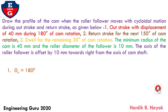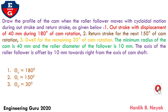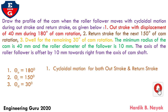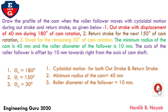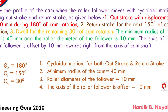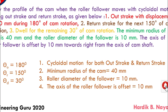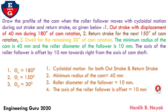Here, outstroke theta-O equals 180 degrees, theta-R equals 150 degrees for the return stroke, and dwell theta-D equals 30 degrees. Cycloidal motion is given for both outstroke and return stroke. Minimum radius of cam equals 40 mm, roller diameter of follower equals 10 mm, and the axis of the roller follower is offset equal to 10 mm. Now we have to draw the profile of the cam using this data.